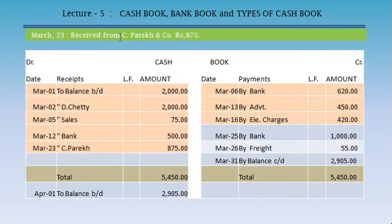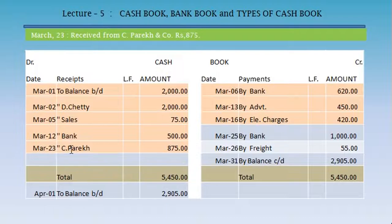Received from C. Parekh and Company, Rs. 875. When there is no mention of bank or cash, it is treated as a cash receipt. So we record it on the debit side of the cash book: March 23, to C. Parekh, Rs. 875.